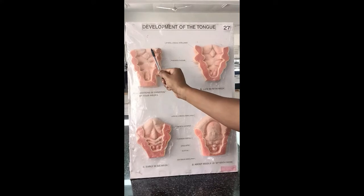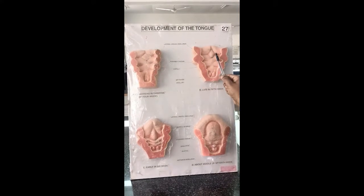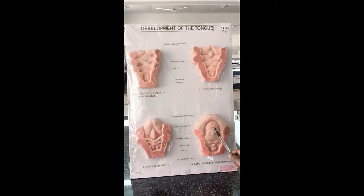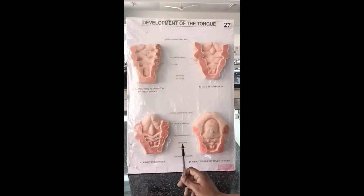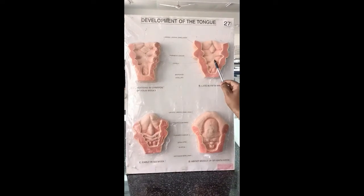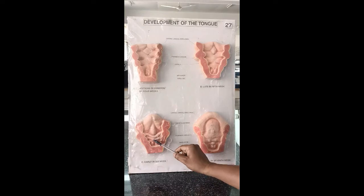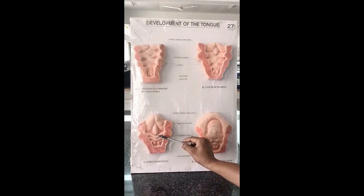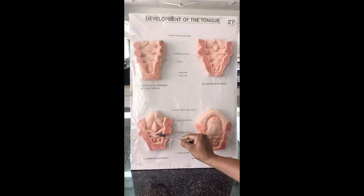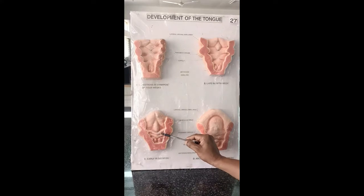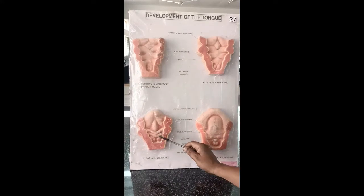The two lingual swellings and tuberculum impar unite and form the anterior two-thirds of the tongue. The hypobranchial eminence or cupola divides into a cranial part and a caudal part. The cranial part forms the posterior one-third of the tongue, and the caudal part forms the epiglottis.